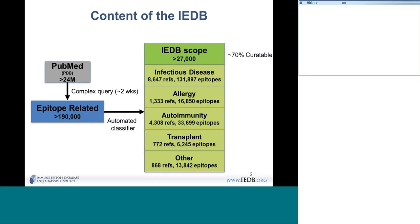Of the papers, roughly 70 percent actually end up in the database. Papers are excluded often because information is lacking — it may affect the sequence, or it's a review article, or there was actually no experimental epitope data, just a mention of where something is present.